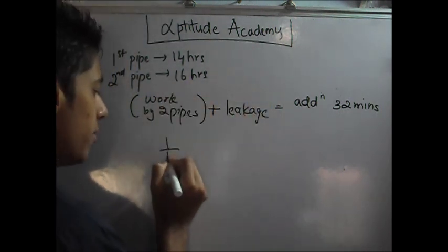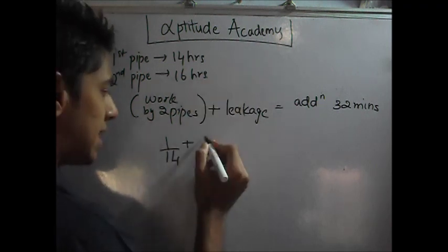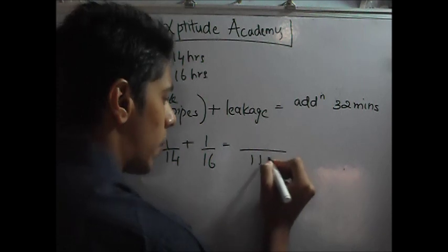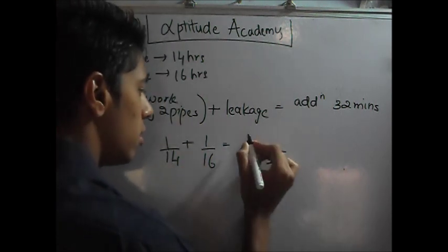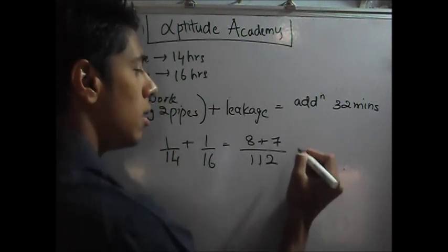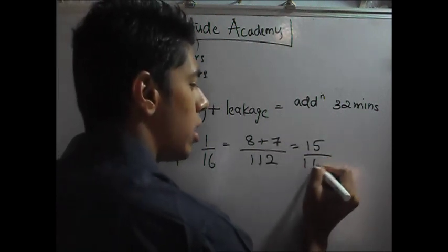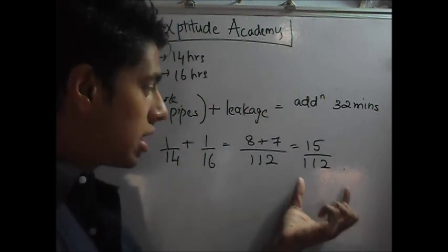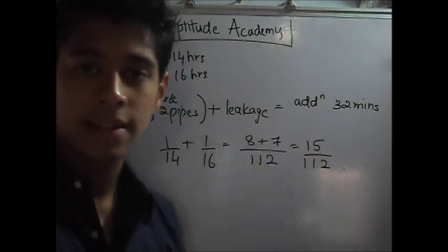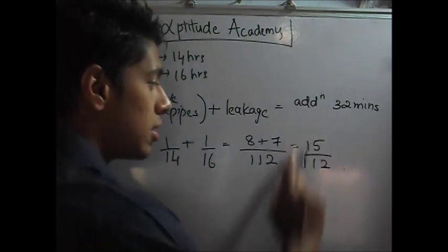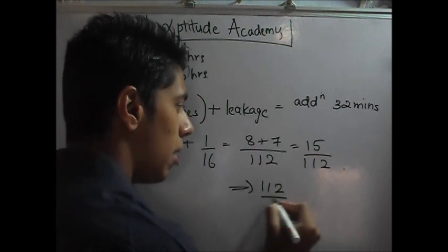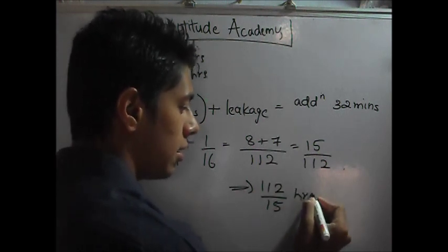How much time will you take? Every hour, 1 by 14 plus 1 by 16. The LCM of 14 and 16 will be 112. 14, this will be 8, plus 16, 7. So, this is 15 upon 112. So, every hour, this much of the tank gets filled if only these two pipes are working. I am not considering the leakage now. So, how much time will it take? It will be the inverse. 112 upon 15 hours.